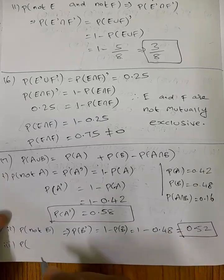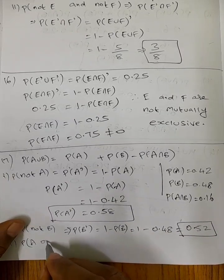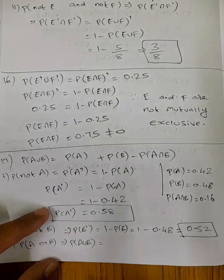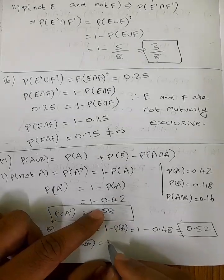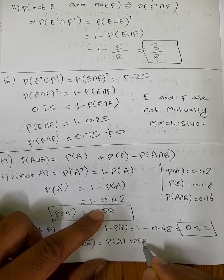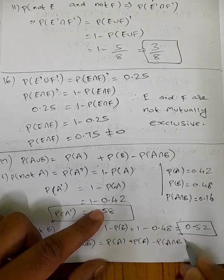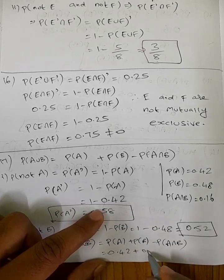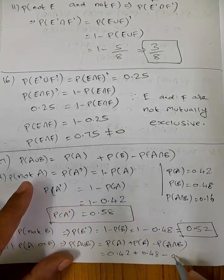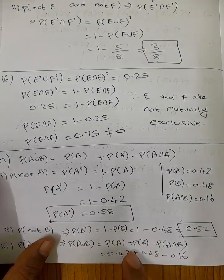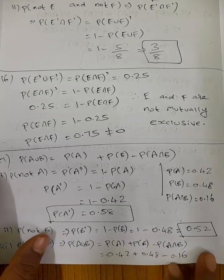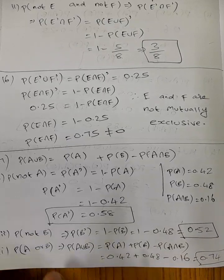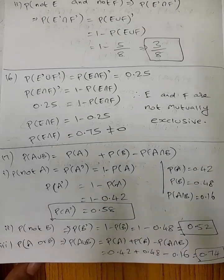Third, P(A or B) — that is P(A∪B). P(A∪B) equals P(A) plus P(B) minus P(A∩B). So 0.42 plus 0.48 minus 0.16. Add: 0.9 minus 0.16 equals 0.74. So P(A∪B) is equal to 0.74. Thank you.